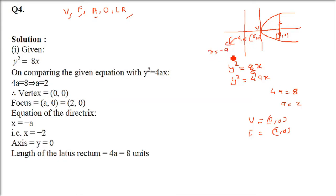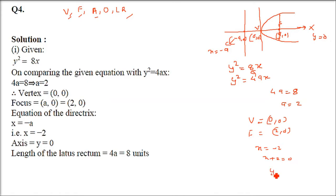The directrix is at x = -a, so x = -2, which we write as x + 2 = 0. The axis is the x-axis, so y = 0. The length of the latus rectum is 4a = 4 × 2 = 8. In this way we can find all parameters for this equation.